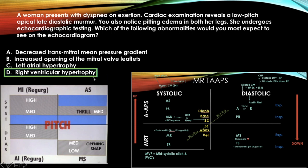The answer is right ventricular hypertrophy. First identify the murmur: low-pitched apical late diastolic = mitral stenosis. Mitral stenosis causes back pressure in the left atrium, which backs up into the pulmonary system, forcing the right ventricle to work harder. Over time the right ventricle hypertrophies — hence right ventricular hypertrophy is the answer.